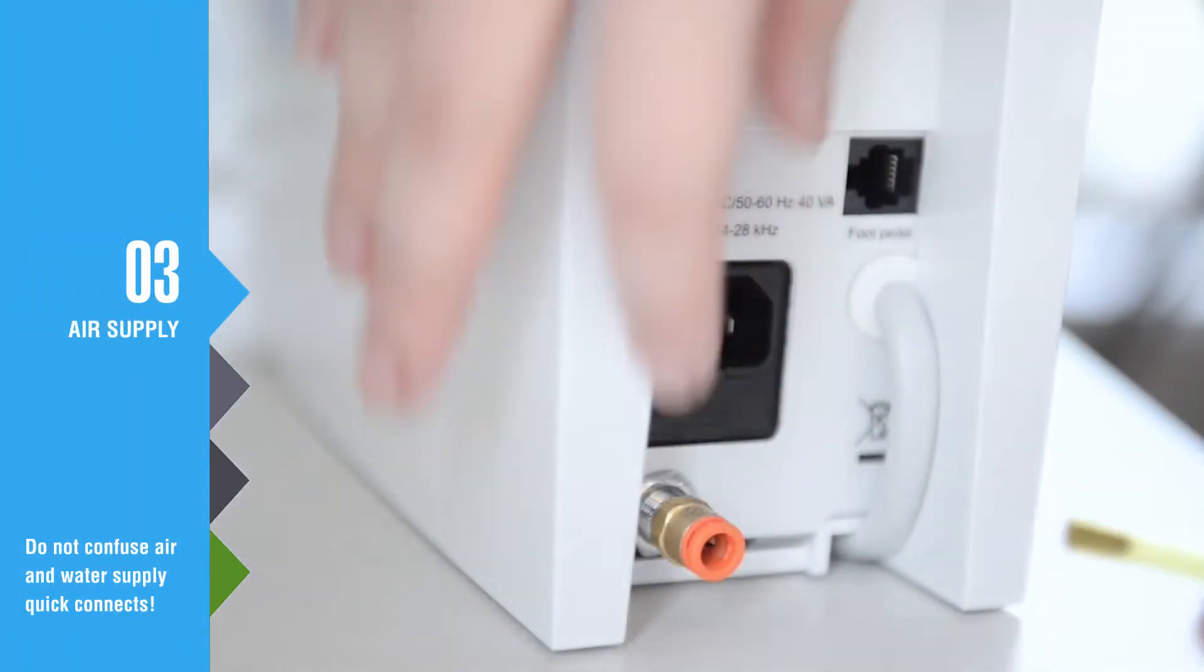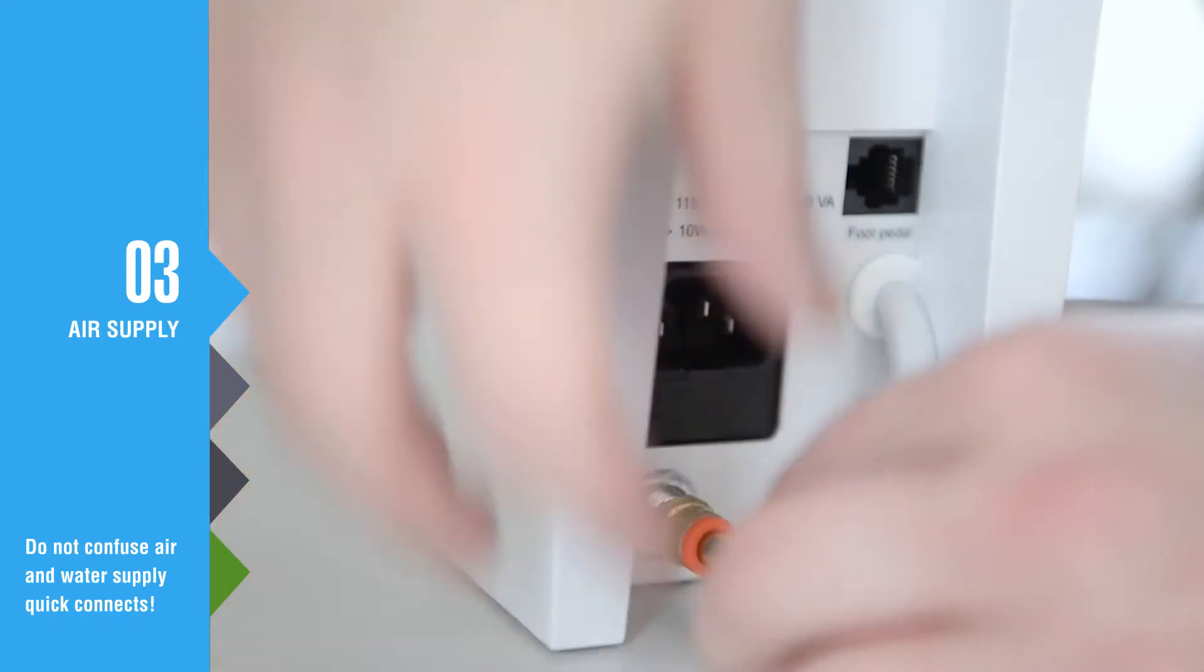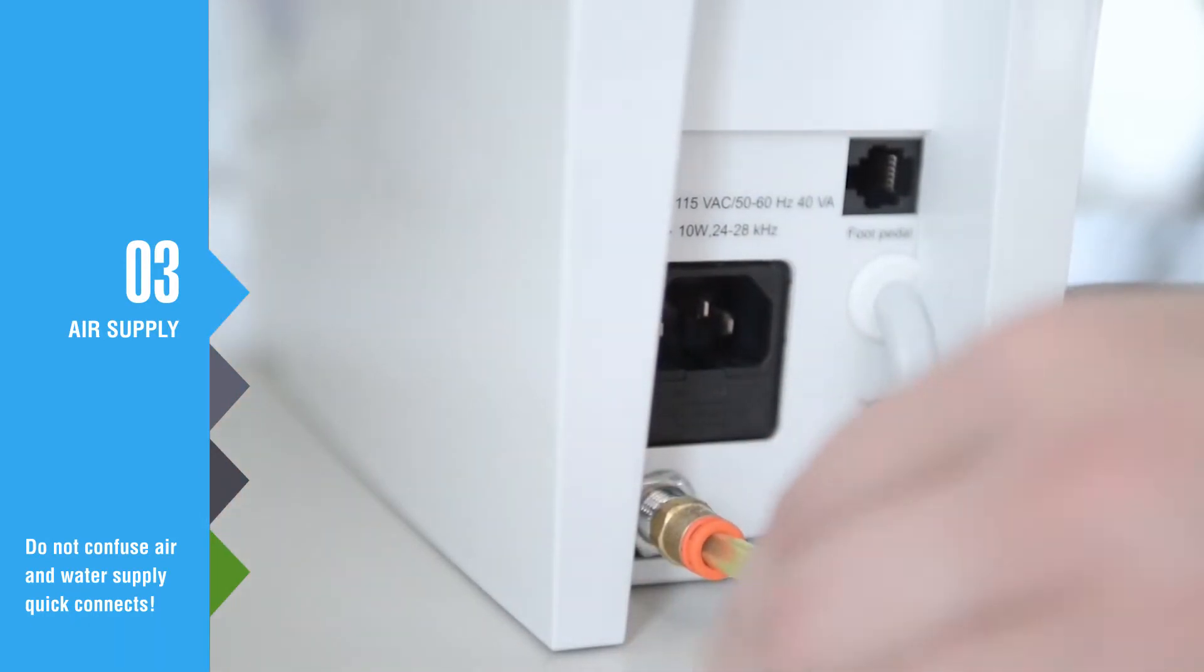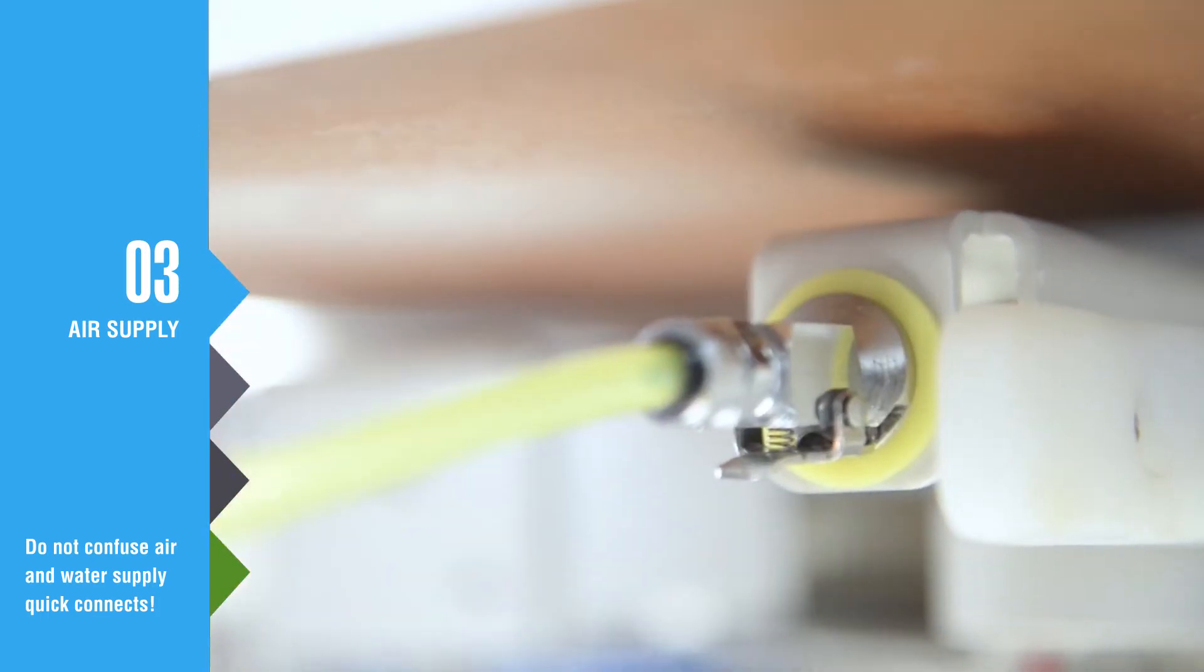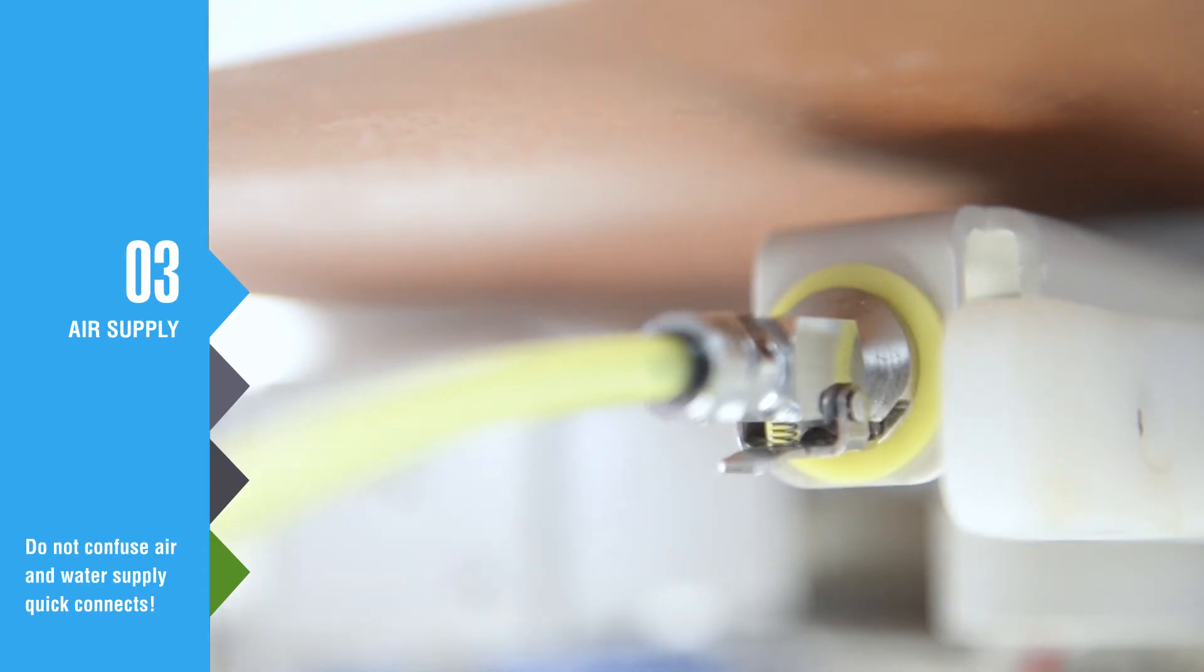Connect one end of the yellow air hose to the quick connect fitting on the back of the unit and the other end to a dry filtered compressed air supply line. If your Biosonic Sous Vide unit requires a water line hook up, make sure the yellow air supply line is connected to the air supply and not the water supply.